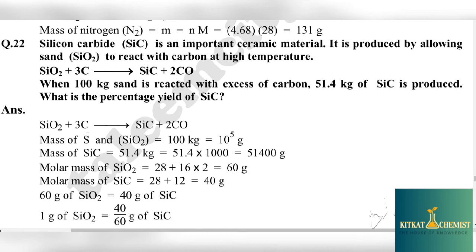The balanced equation is given. We need to find the percentage yield. Mass of sulfur and SiO2 is 100 kg. We need to convert to grams, so multiply by 1000, which gives 100,000 grams. The mass of silicon carbide is 51.4 kg, which converts to 51.4 times 1000 equals 51,400 grams. The molar mass of SiO2 is 28 for silicon plus 16 times 2 for oxygen, which equals 60 grams.